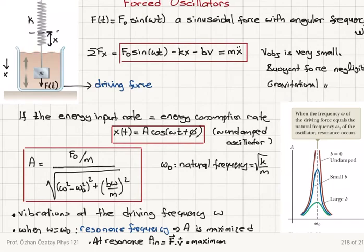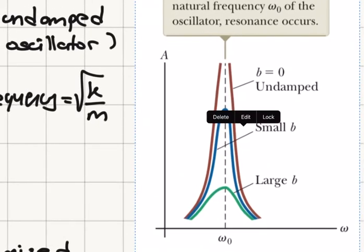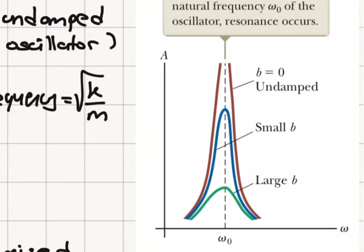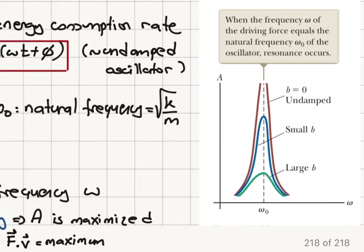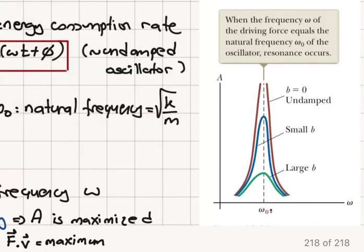Now, if you look at the behavior of the amplitude as a function of omega and as a function of b, you see the following situation. When omega is equal to omega 0, you can see that the amplitude is getting maximized. So this is my resonance frequency. And as I go away from the resonance frequency, the amplitude of the oscillations getting smaller and smaller.